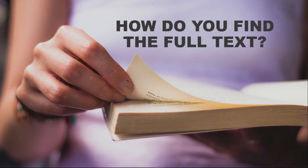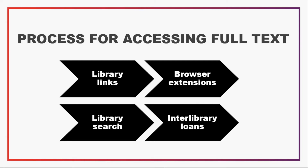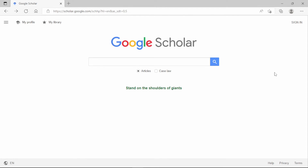When searching on Google you are likely to come across things you can't automatically access the full text of. This is because Google doesn't automatically recognise your affiliation with the university the way the library catalogue would. A general process would be: set up your library links on Google Scholar, install the browser extensions from the library, and if you still can't find it, use the library search or request an item through interlibrary loans. Setting up your library links lets Google Scholar know you are part of the University of Essex and it will provide links through university subscriptions where available — though Google isn't always accurate in this regard.